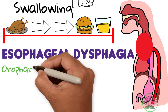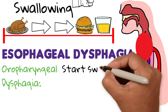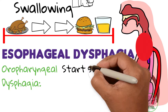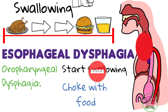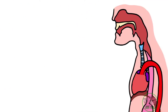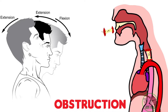If it were oropharyngeal dysphagia, the patient would complain of difficulty initiating the swallow and also choking with food. Moreover, the presence of regurgitation of undigested food chunks, as well as the need of the patient to adopt strange postures so the food can go down into the stomach, points us towards an obstruction of the esophagus.